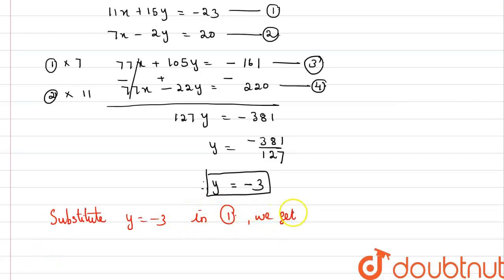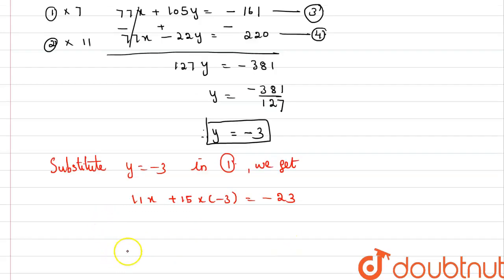We will replace y as negative 3. We will get 11x plus 15 into negative 3 equals negative 23. Which implies 11x minus 45 equals negative 23.